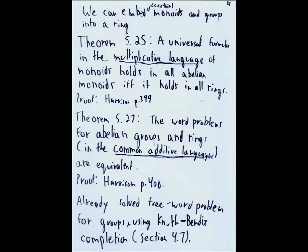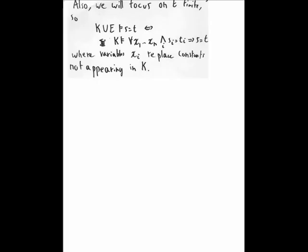So also we would like to focus on E finite. So when we write K union E proves S equals T, then we can move all the E's to the right. And so that K proves for any X1 up to Xn, the finite conjunction of SI equals TI implies S equals T, where we quantify over variables XI and we use those to replace the constants that appear in the ground equations but don't appear in K.